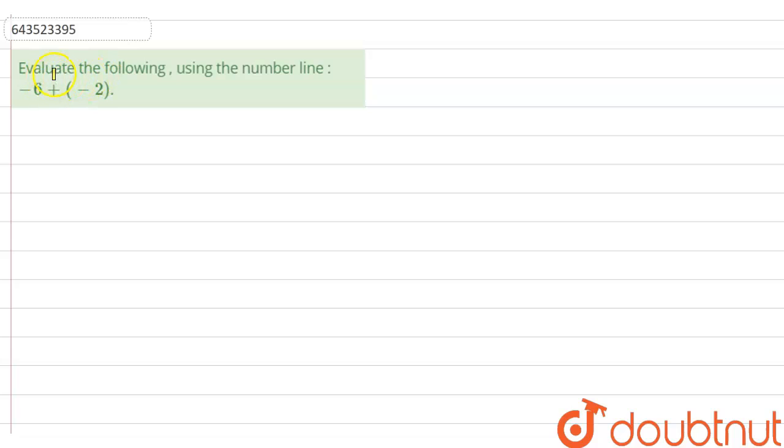Hi guys, we have a question right now. Evaluate the following using the number line: minus six plus minus two in the bracket. Number line, okay.